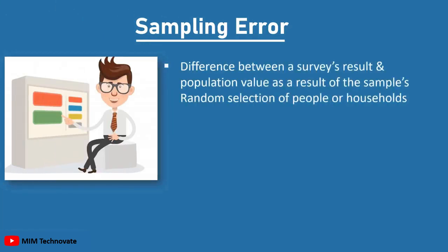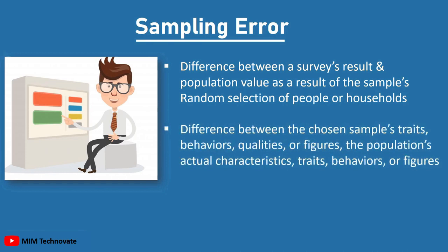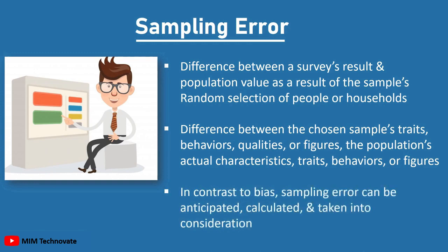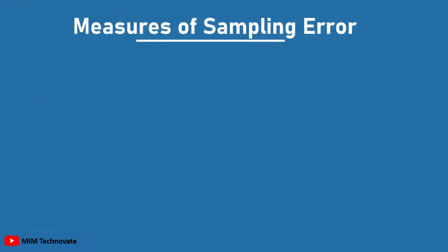Sampling error is the difference between a survey's result and the population value, as a result of the sample's random selection of people or households. It is the difference between the chosen sample's traits, behaviors, qualities, or figures and the population's actual characteristics, traits, behaviors, or figures. In contrast to bias, sampling error can be anticipated, calculated, and taken into consideration.